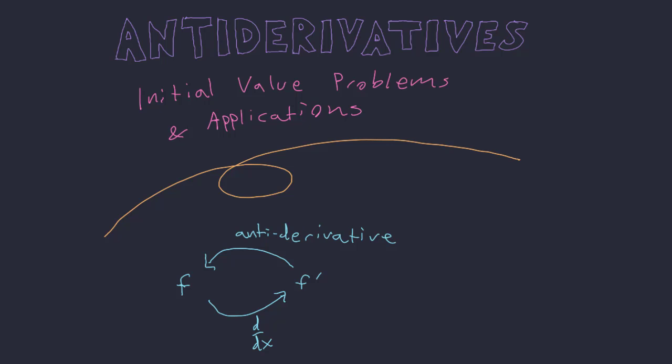Hello class. In part two of this lecture for antiderivatives, we're going to be talking about initial value problems and applications. Specifically, what initial value problems are: we have this technique where we find antiderivatives with a plus C. All we're really doing with initial value problems is finding a specific C given a specific situation. Applications of antiderivatives are going to be very similar to applications of derivatives — they just work in reverse.